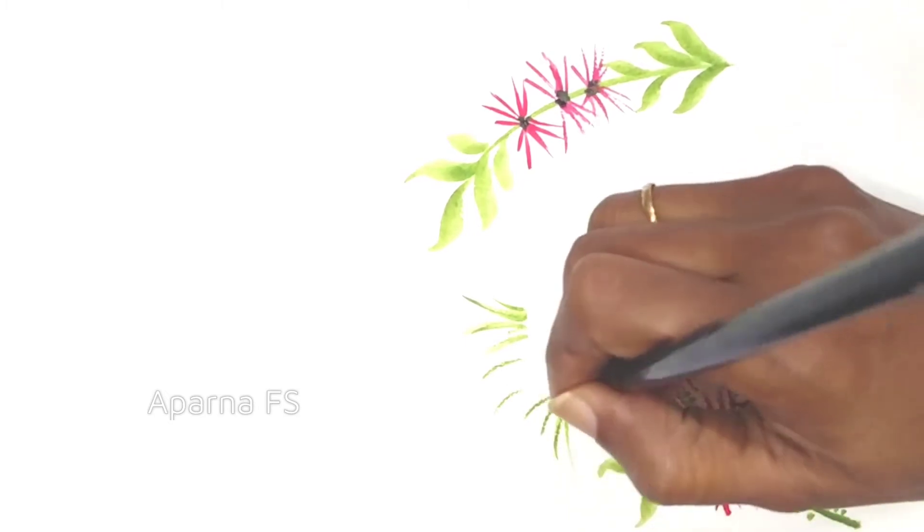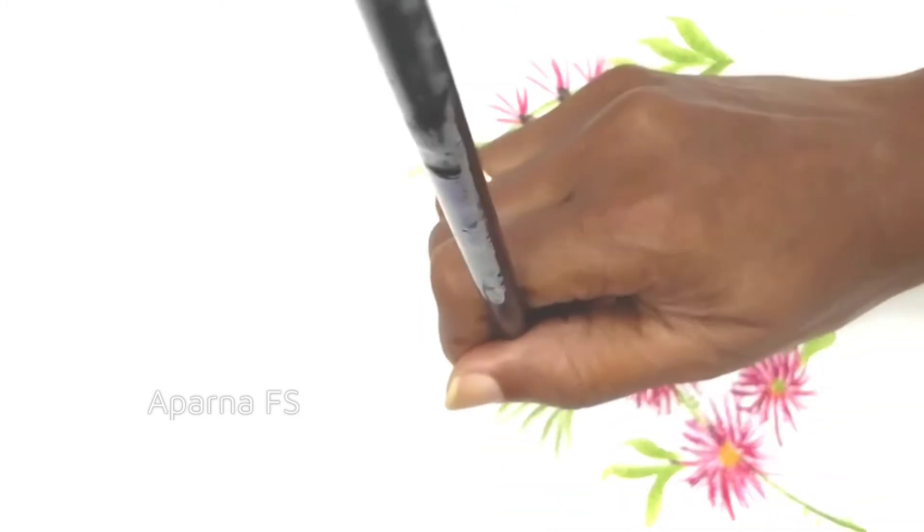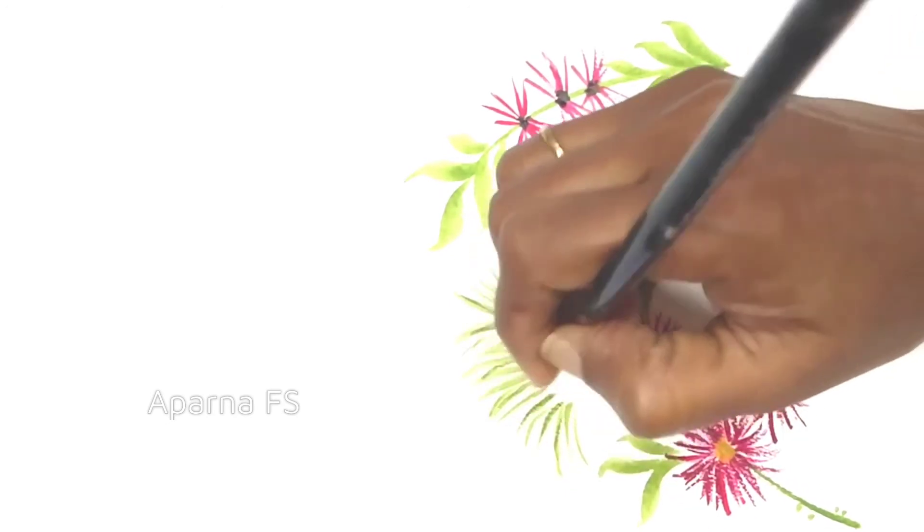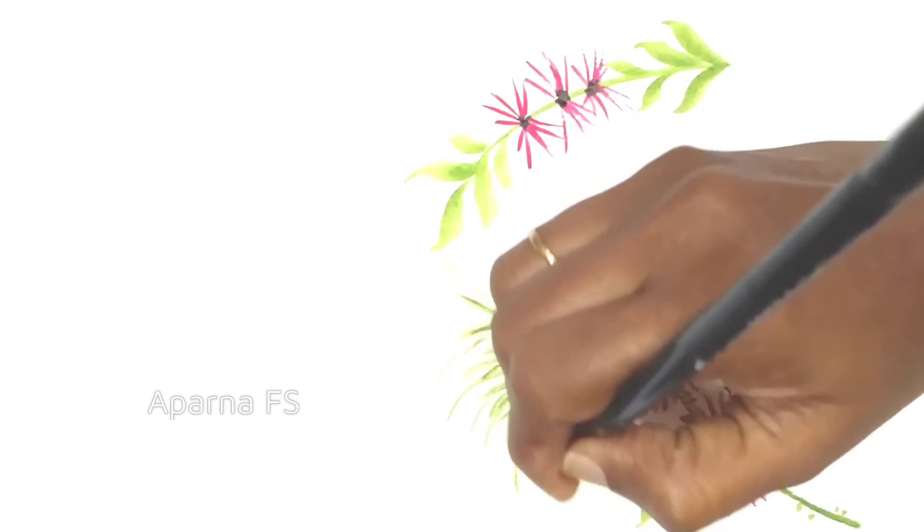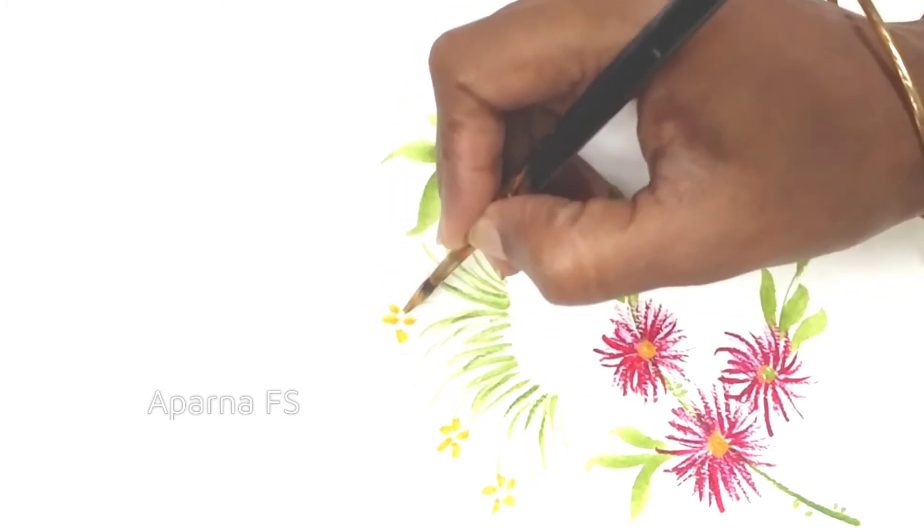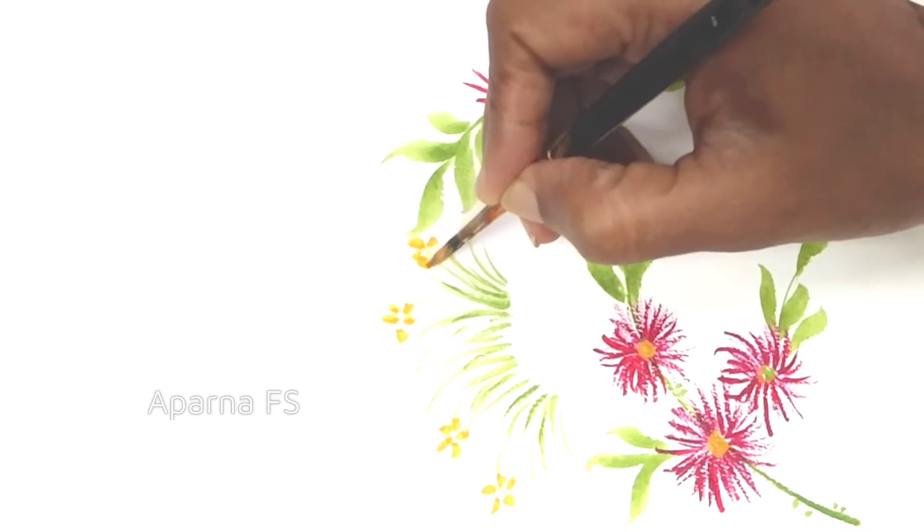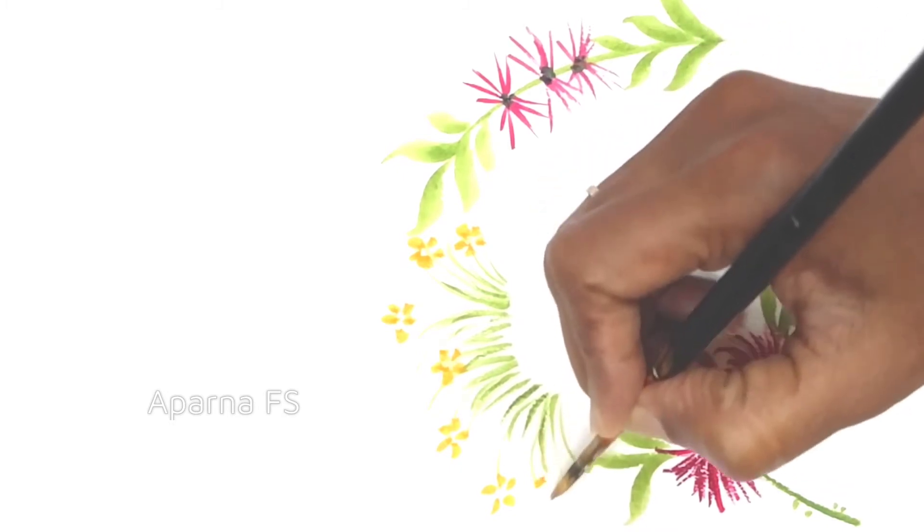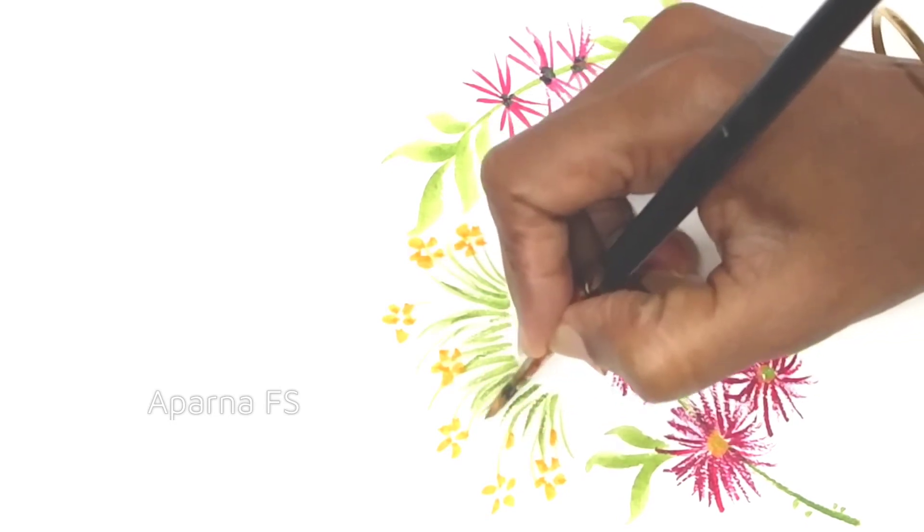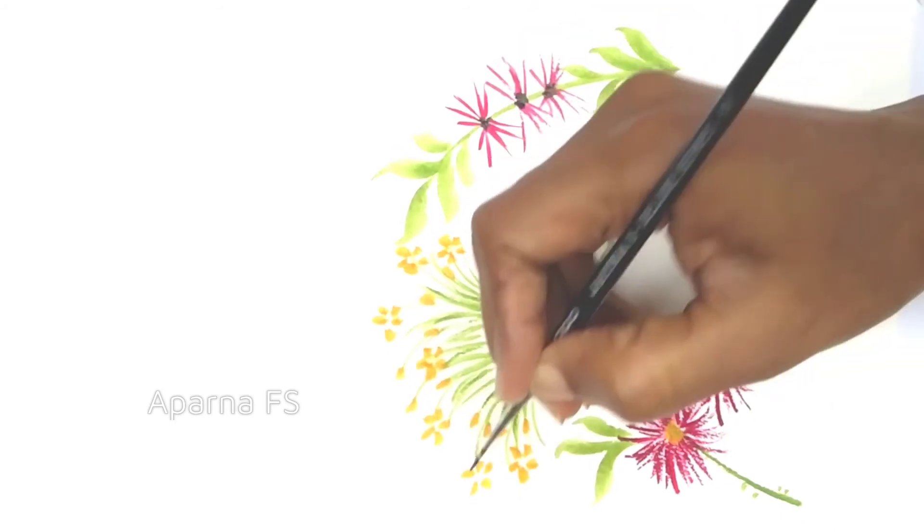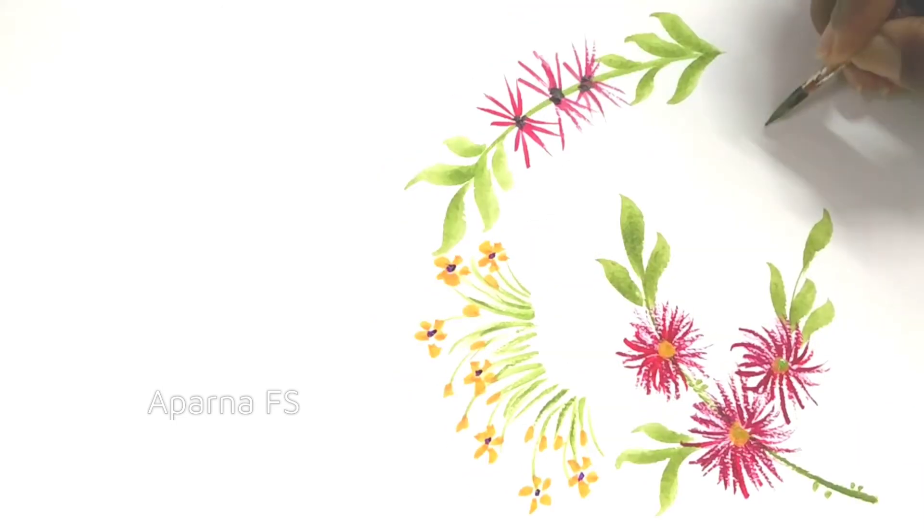I am taking yellow color for small flowers. This design will look very beautiful on the borders of saris and dresses. You can make thick strokes with eight number brush for saris.